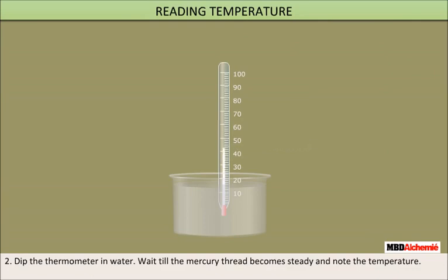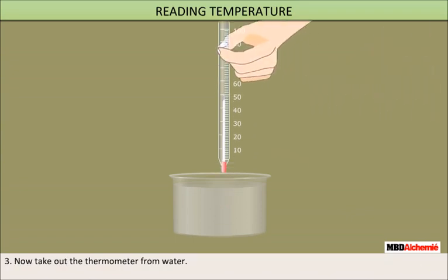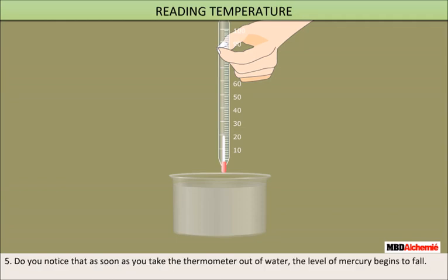Now take out the thermometer from the water and observe carefully what happens. Do you notice that as soon as you take the thermometer out of water, the level of mercury begins to fall? This means that the temperature must be read while the thermometer is still in water.